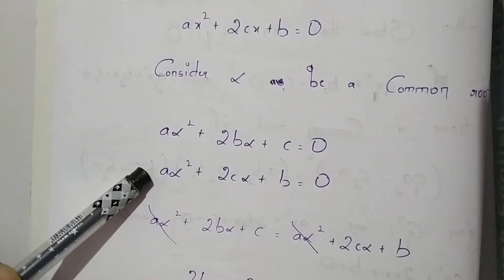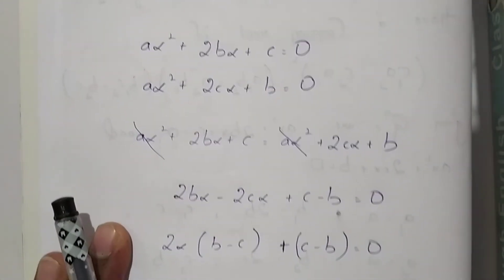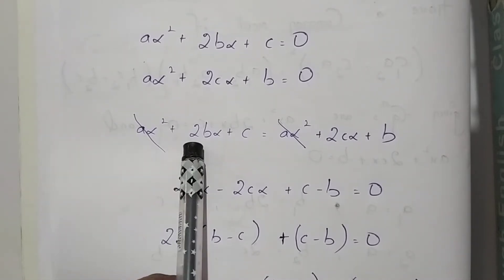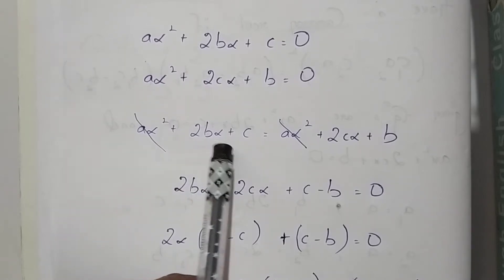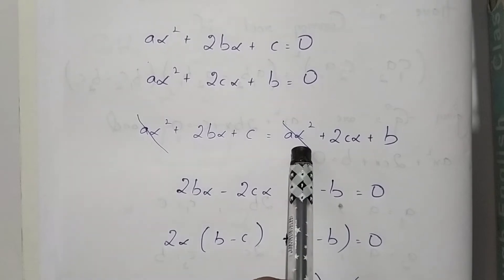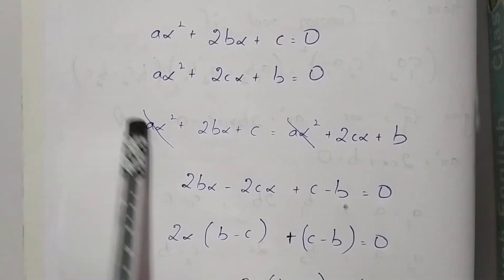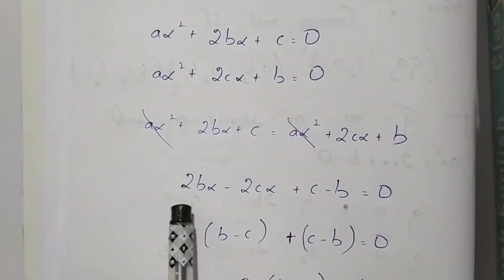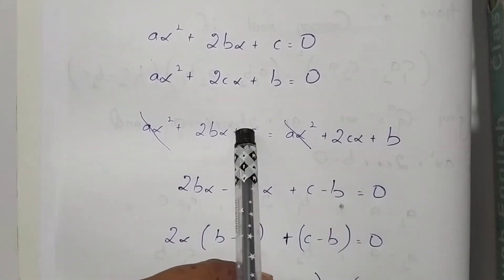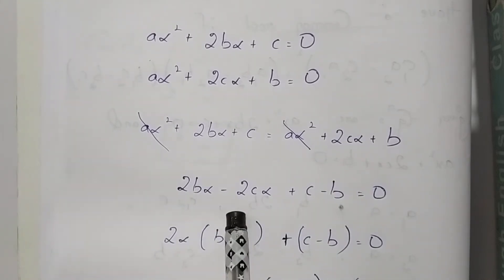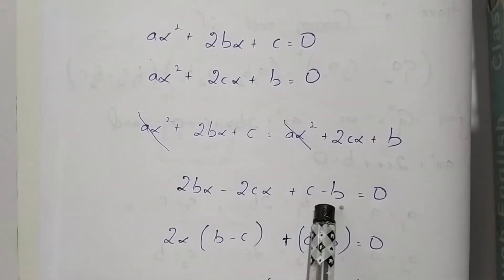We equate these two equations. Since both are equal to 0, we get a·α² + 2b·α + c = a·α² + 2c·α + b. From this we can cancel a·α² on both sides. Sending 2c·α to the left-hand side, we get 2b·α − 2c·α, and sending b to the left-hand side gives c − b.